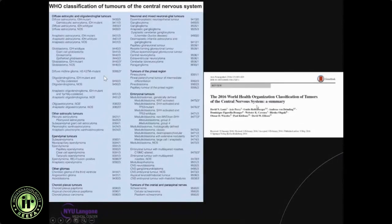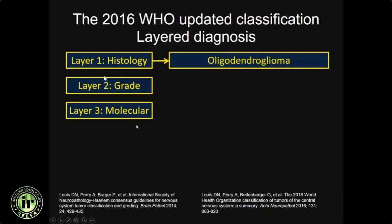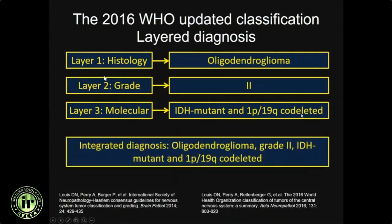This is the WHO paper discussing the 2016 classification update. One important outcome was that neuropathologists now require a three-layer diagnosis — rather than purely histology and grade, they must incorporate molecular markers. For example, an oligodendroglioma grade 2 must include IDH mutation status and 1p19q codeletion testing. The integrated diagnosis should read: oligodendroglioma, grade 2, IDH mutated, 1p19q co-deleted.